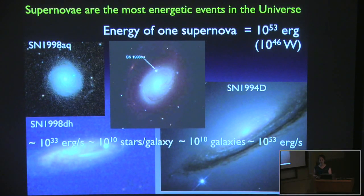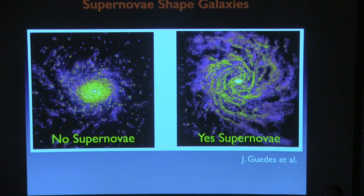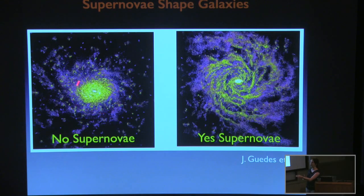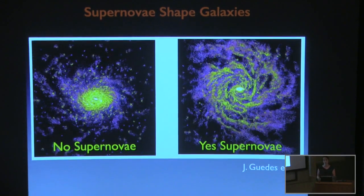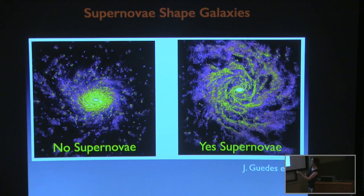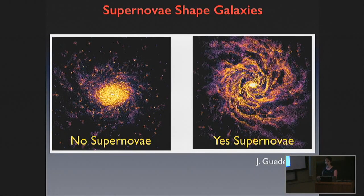Two ways that supernovae are important: Number one is that supernovae shape galaxies. It was realized in the 1970s that if one tries to form a galaxy without any supernovae, you end up with a very unphysical-looking galaxy. Without supernovae in the Milky Way, it would look like the picture on the left — all gas accreting to the dark matter potential well in the middle, with about an order of magnitude too much gas and stars in the center and no extended disk structure. Once supernovae are incorporated into galaxy formation simulations, they remove gas from the low angular momentum center, producing a more realistic bulge and extended spiral structure like our Milky Way. Supernovae are important to even get the shape of our own galaxy.